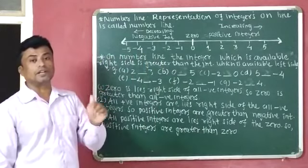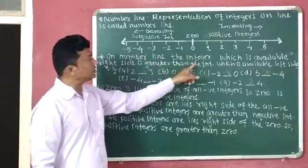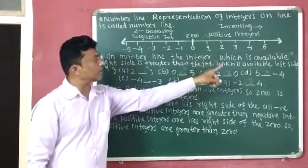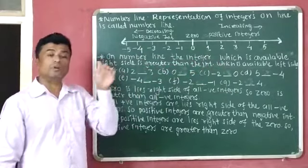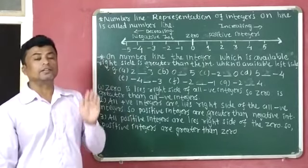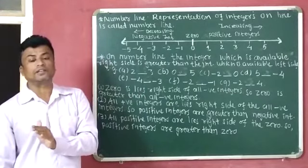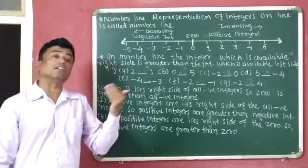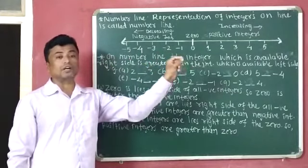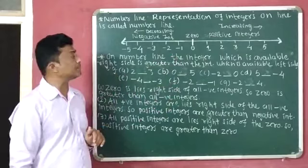Now we will discuss one point which is related with the number line. On the number line, the integer which is available on the right side is always greater than the integer which is available on the left side.